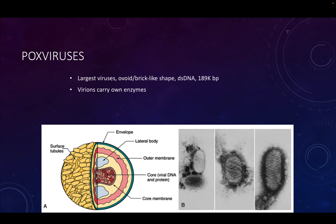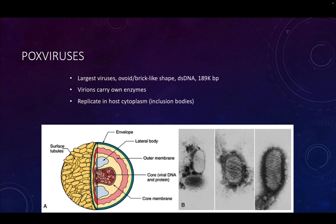What's unique about poxviruses is not simply that they carry a lot of their own enzymes, but why they have to carry them. We can see in this cartoon of the virion that the core of the viral particle contains viral DNA and proteins. What makes poxviruses unique, especially among DNA viruses, is that they replicate in the host cytoplasm. In infected host cells under the microscope, you'll see inclusion bodies in the cytoplasm that represent sites of viral replication.